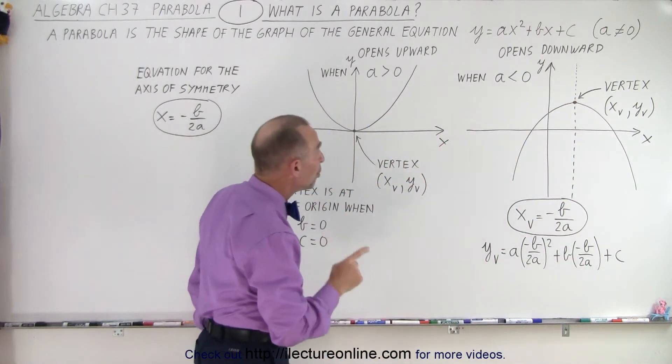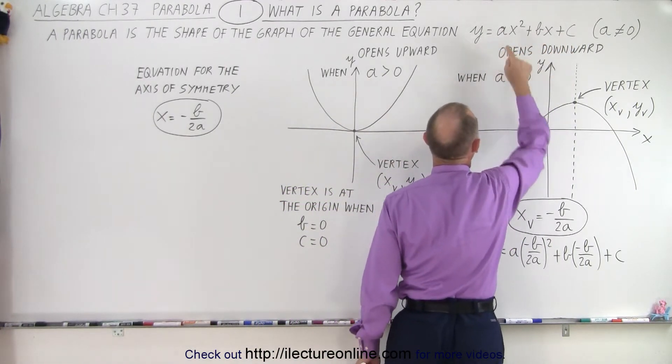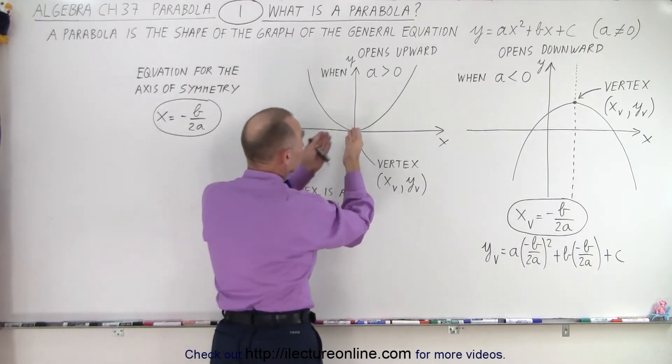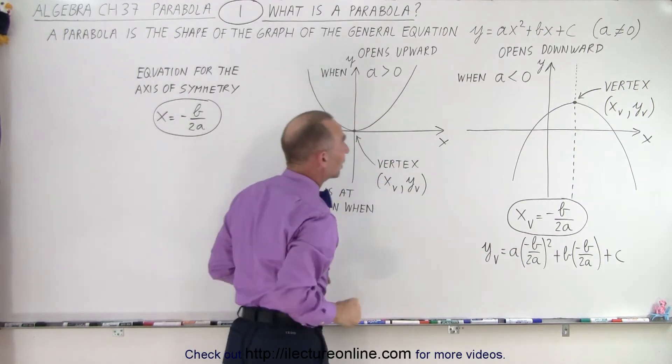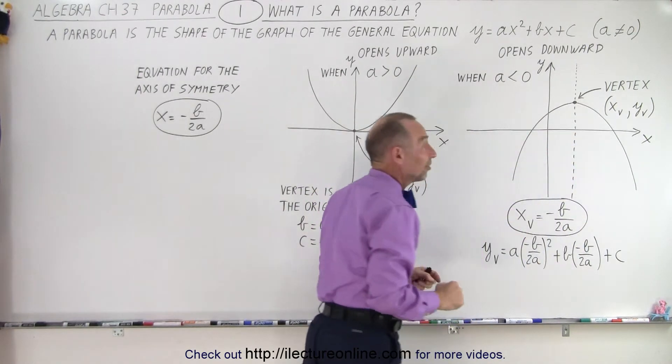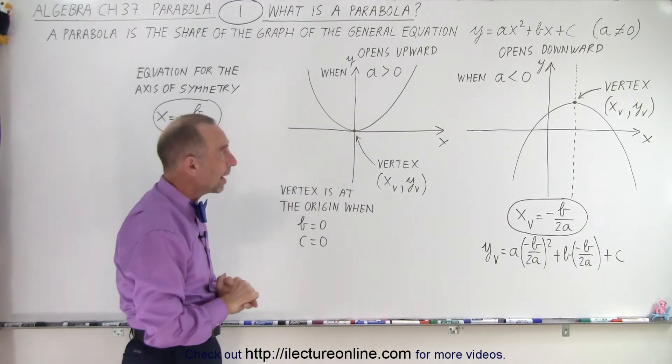Now, if both b and c are zero, we only have y equals ax squared, then the parabola will have the vertex at origin. Either it will open upward if a is greater than zero, and it will be at the vertex opening downward if it's less than zero. Again, that's the case when b and c are both zero at the same time.